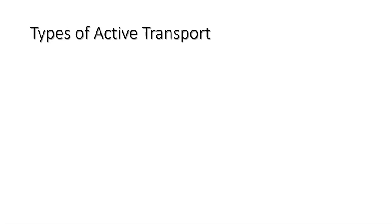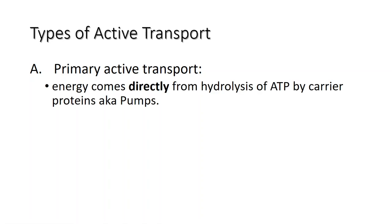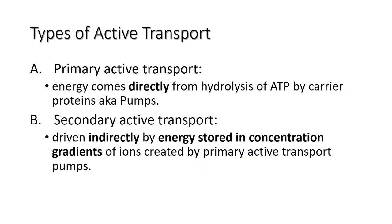Active transport processes are distinguished according to their source of energy. In primary active transport, the energy to do work comes directly from hydrolysis of ATP by carrier proteins called pumps. In secondary active transport, transport is driven indirectly by energy stored in concentration gradients of ions created by primary active transport pumps.